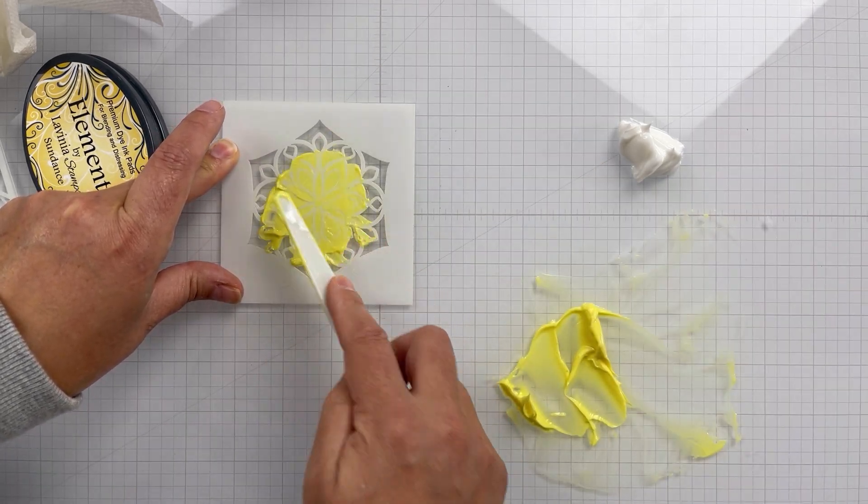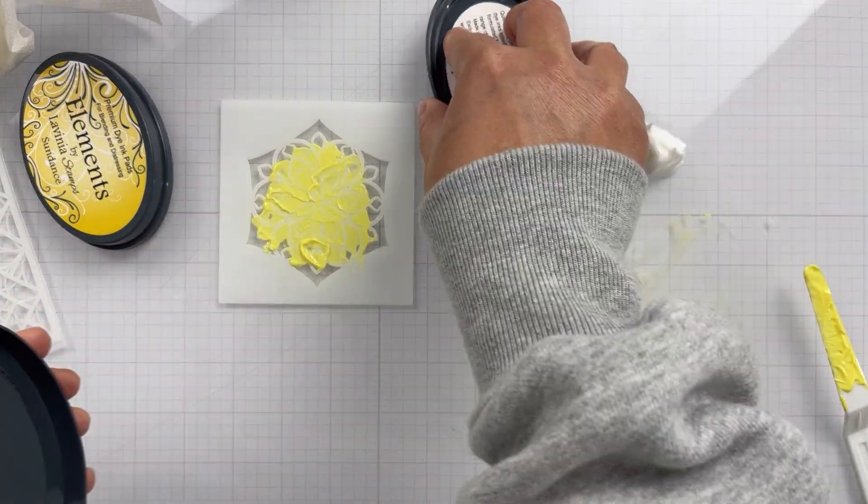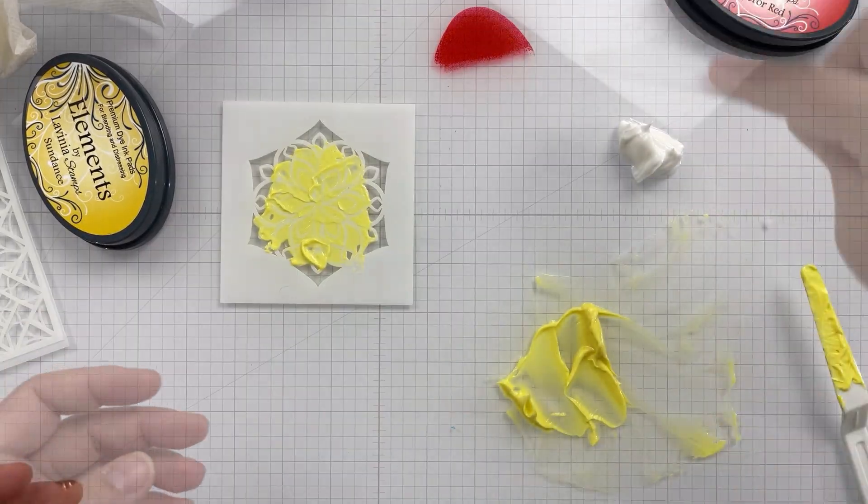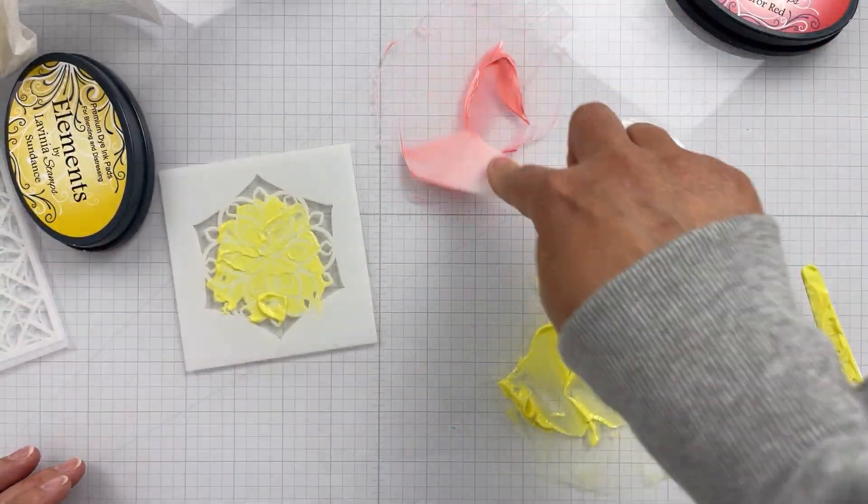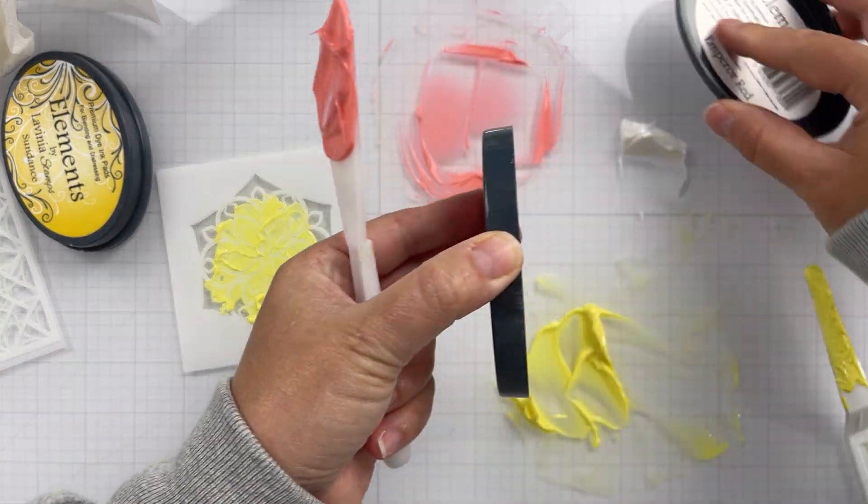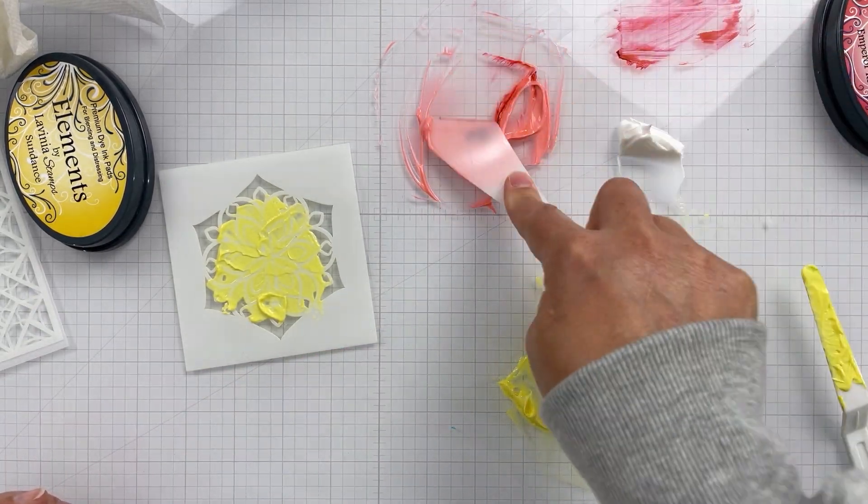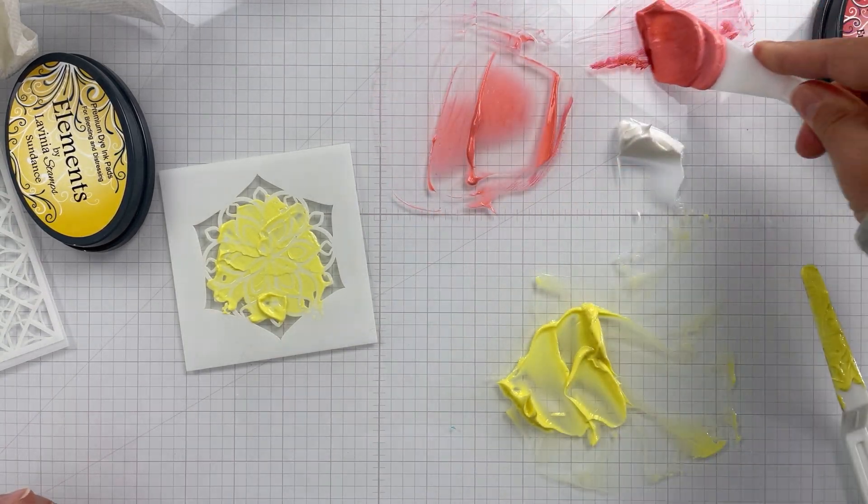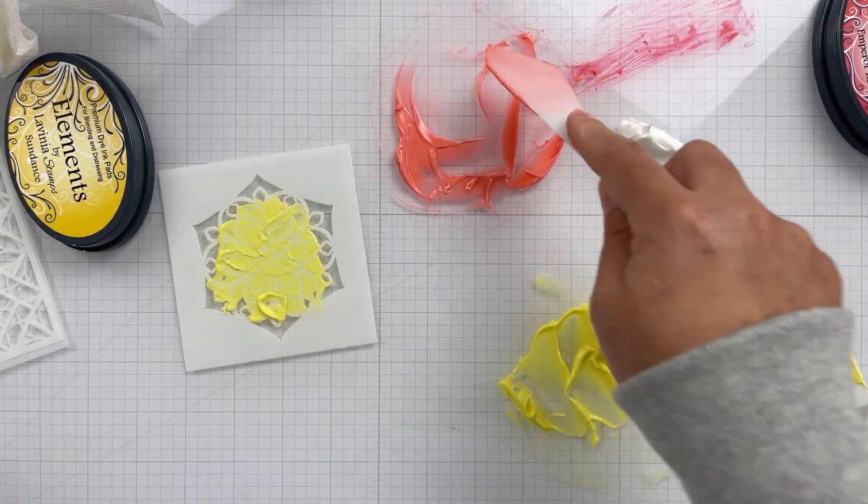Reinkers, you could use those. Pigment powders, you can use those because the medium dries clear. The problem with using gouache with this medium is that the gouache has white pigment in it, so it makes it dry opaque. You don't want to put something opaque in the transparent medium because it's going to take on whatever you're adding to it. Just make sure whatever medium you use to color your paste or your gel, it's got to dry clear.